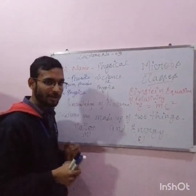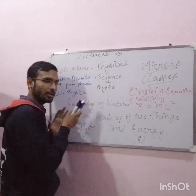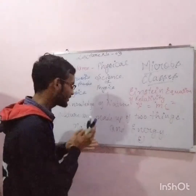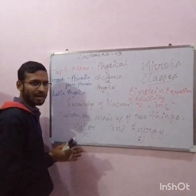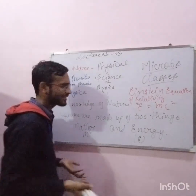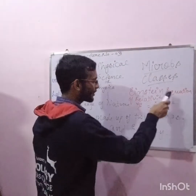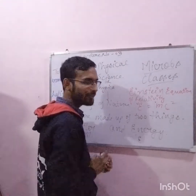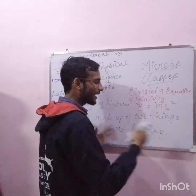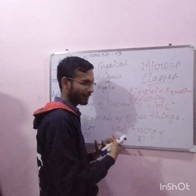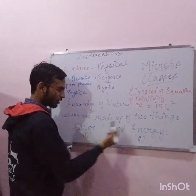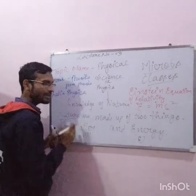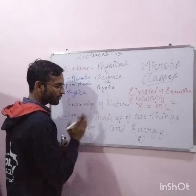Physics and physical science is the discipline of science which deals with the study of nature. Nature is made up of matter and energy. Albert Einstein gave the relativity equation, which shows how energy and matter — mass — are related to one another. So we have to study both matter and energy, because they make up our nature.